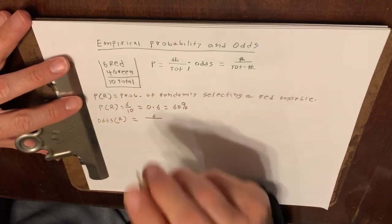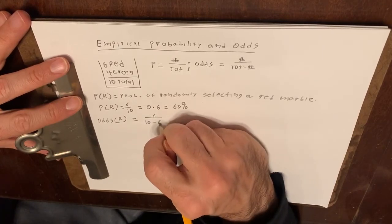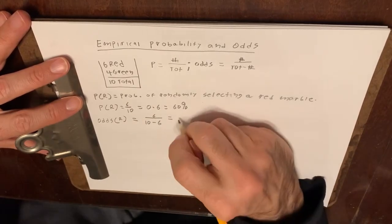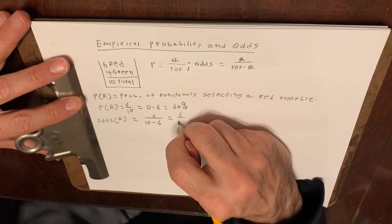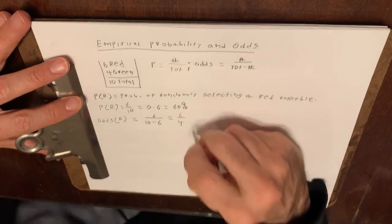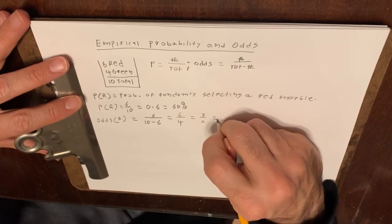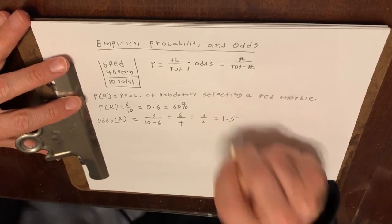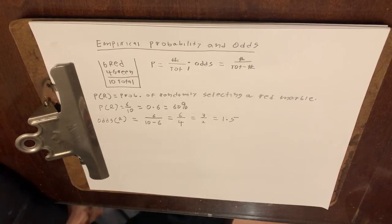So the odds of randomly selecting a red marble would be the number, six, divided by the total, which is ten, minus the number, which is six. Which is the same thing as six over four, which is the same thing as three halves, which is equivalent to 1.5.